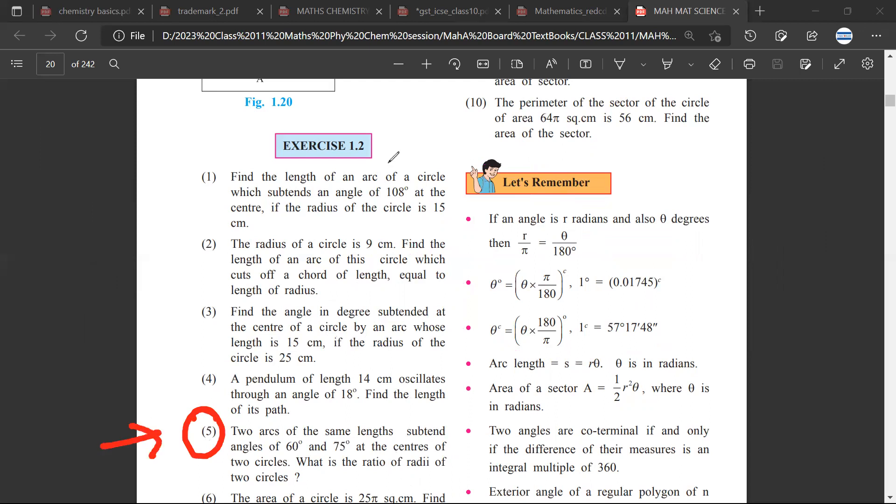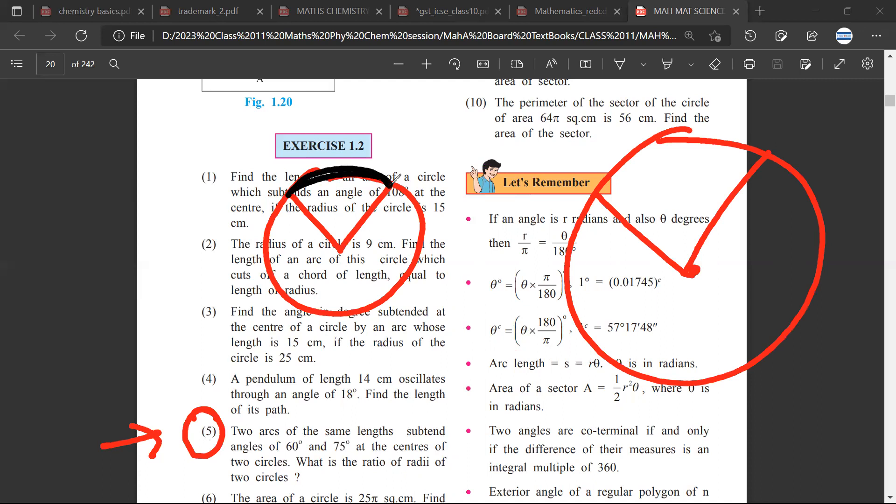Question number five: Two arcs of same length subtend angles of 60 degree and 75 degree at the center of two circles. So this is one circle, this is another circle. They subtend equal arcs, so this is equal to this.